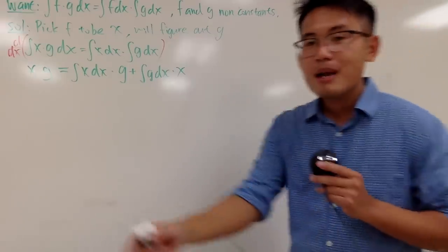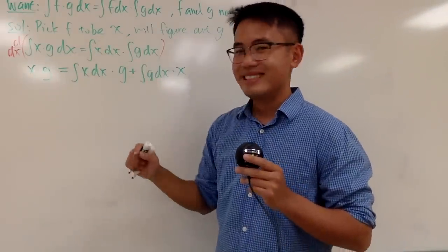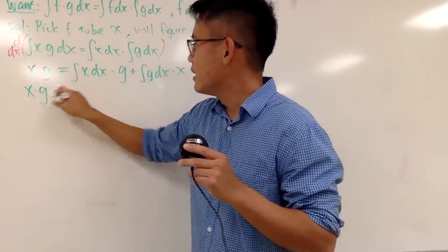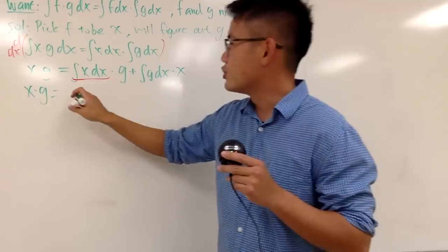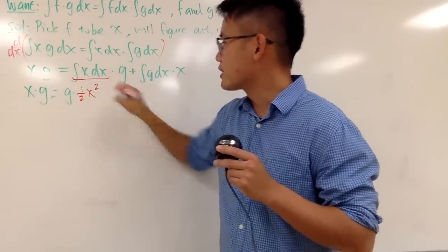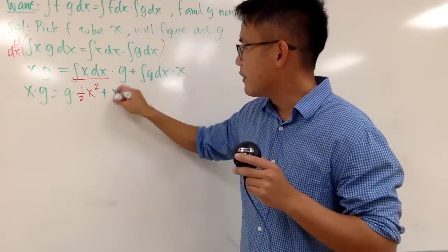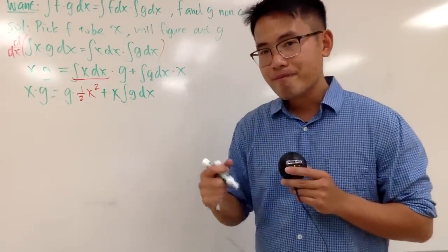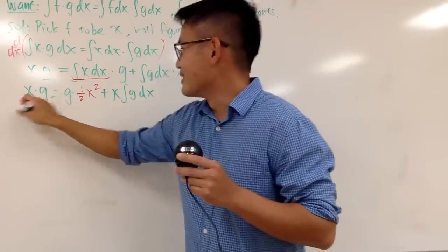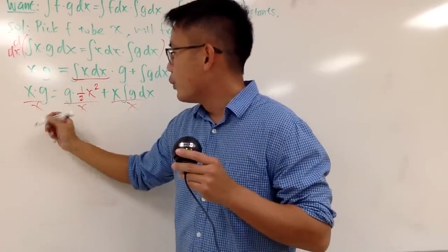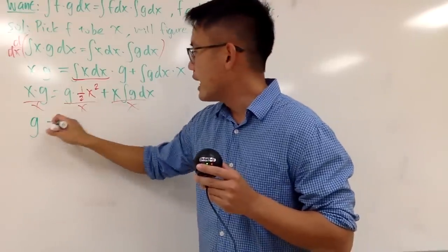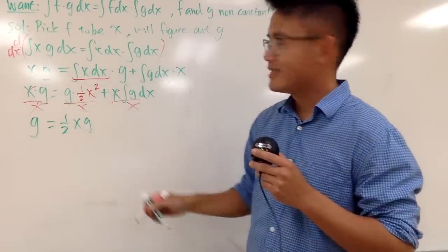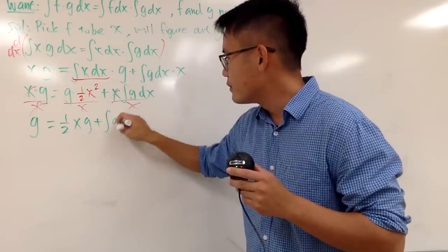Now, because I already chose f to be x, I can easily figure out what this is. On the left-hand side we have x times g. The integral of x dx is just one-half x squared. And on the right-hand side we have one-half x squared times g, plus x times the integral of g dx. From here, we can divide everything by x, since every term has an x. So we get: g equals one-half x times g, plus the integral of g dx.